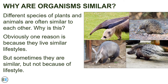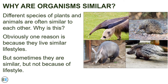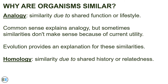However, sometimes traits are similar but not because of a similar lifestyle. It turns out there are two distinct reasons why organisms are similar, so we use two different technical terms to describe the similarity. Analogy describes similarity due to shared function or lifestyle — this is when the traits of organisms are similar because they do similar things, and our common sense can often be used to explain why traits are analogous.